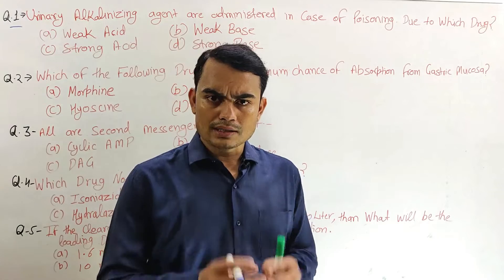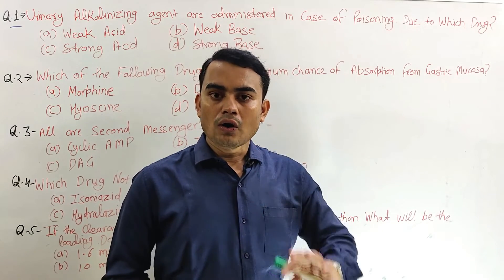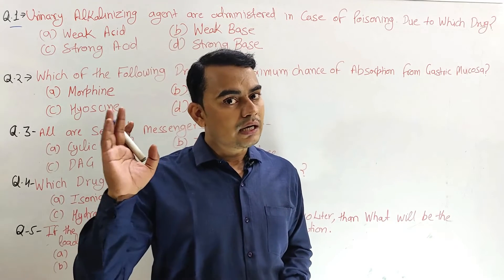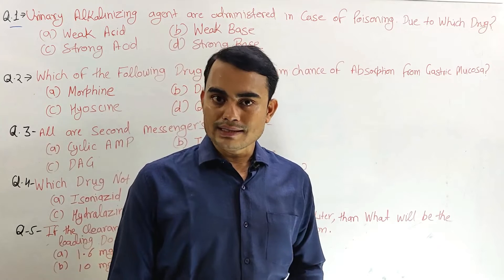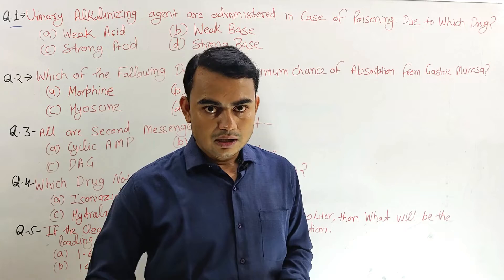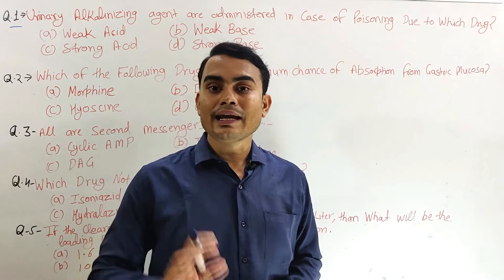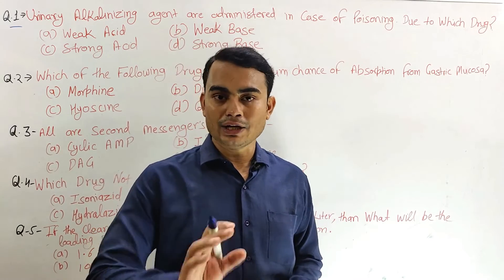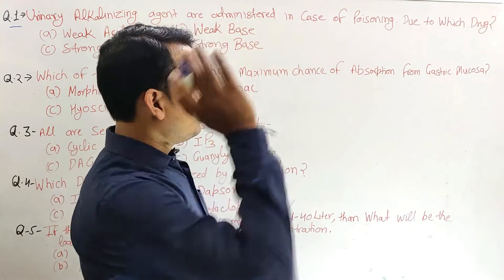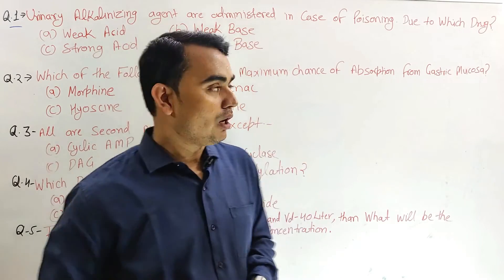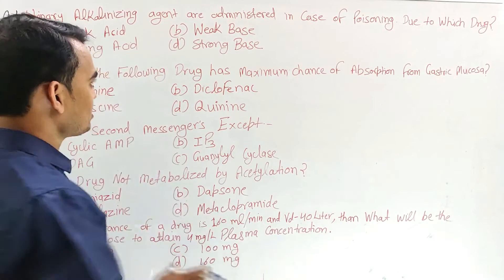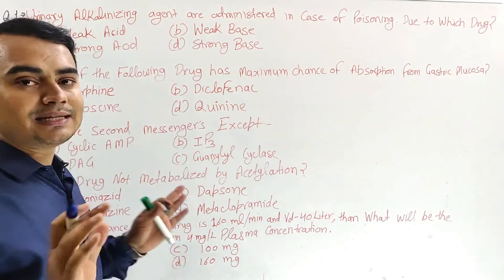First of all, put a simple thing in your mind — all drugs are either weak acid or weak base. They are not strong acid or strong base, because strong acids and strong bases ionize at all pH ranges. So if they are ionized, they cannot be absorbed from the GIT or have a good volume of distribution. So we can remove the options strong acid and strong base — these cannot be our answer.